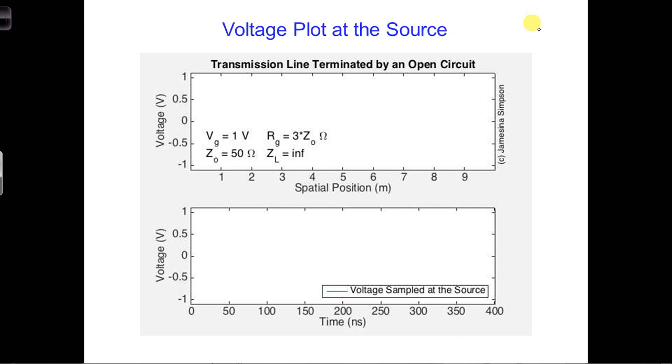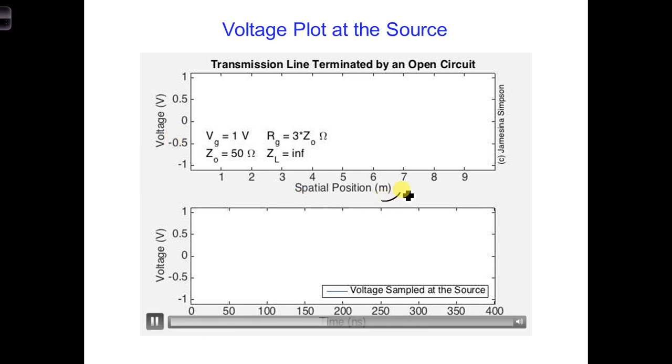First, I have a movie I'd like to show you. The top part of this movie shows the voltage versus spatial position along the transmission line. And on the bottom, we'll see the voltage plotted at Z equals zero, so at the generator, versus time.